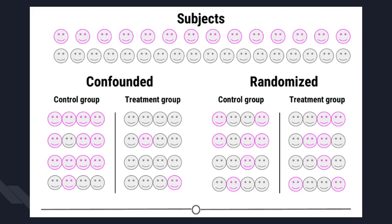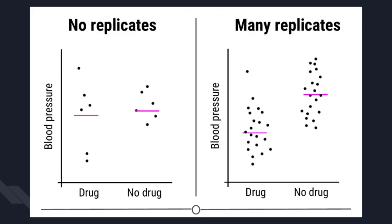Another strategy is spreading any possible confounding effects equally across the groups being compared. For example, making sure both groups have similar ages and age ranges helps mitigate any effect age may have on your dependent variable. This balancing of confounders is often achieved by randomization. Generally we don't know what will be a confounder beforehand, so randomly assigning individuals to each group means that any potential confounding variables should be distributed between groups roughly equally, helping to eliminate or reduce systematic errors.